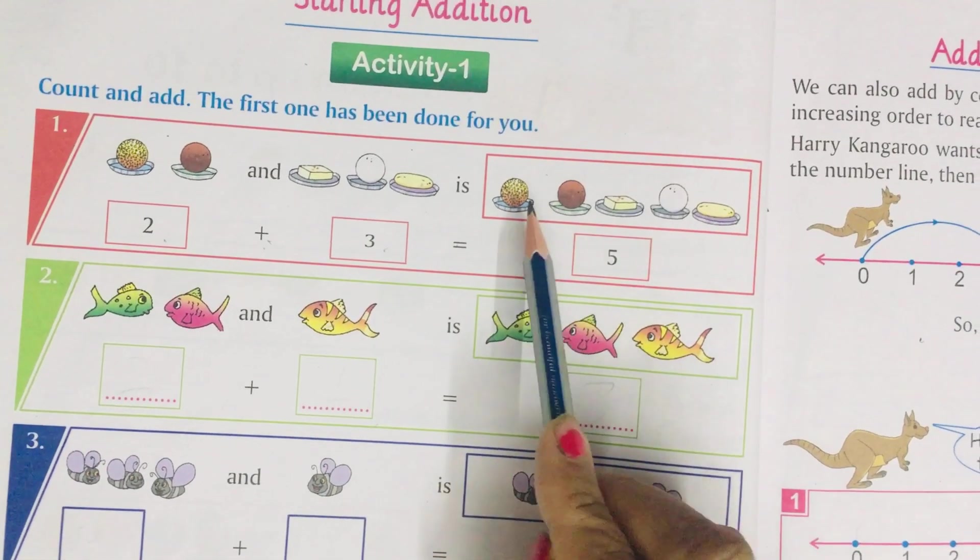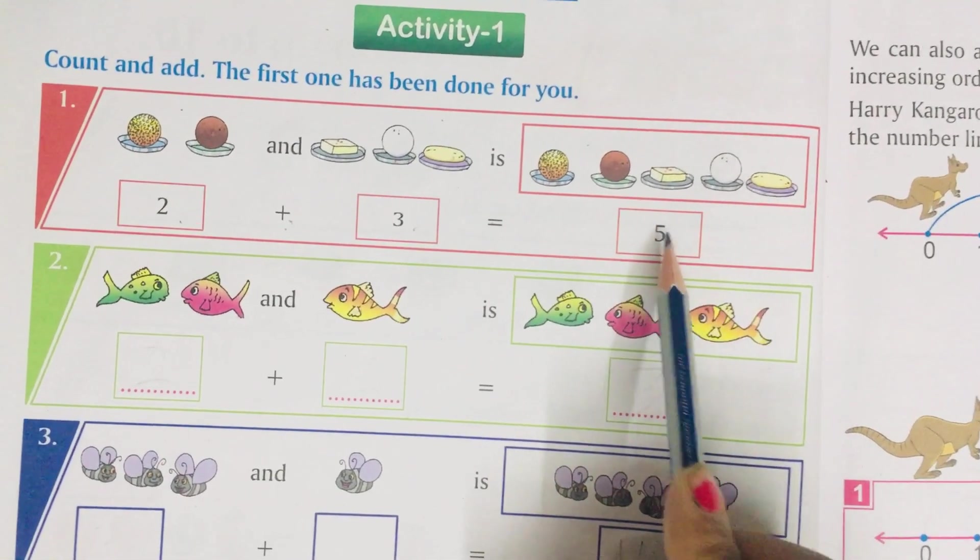What will be the answer? Count this: 1, 2, 3, 4, 5. So, 5 will come here.